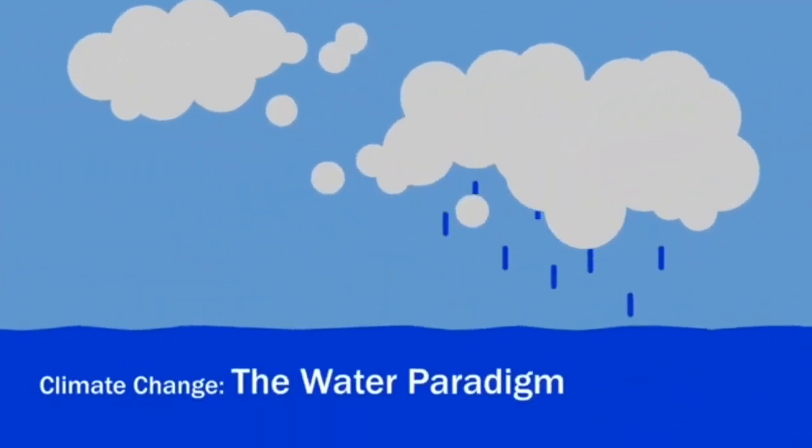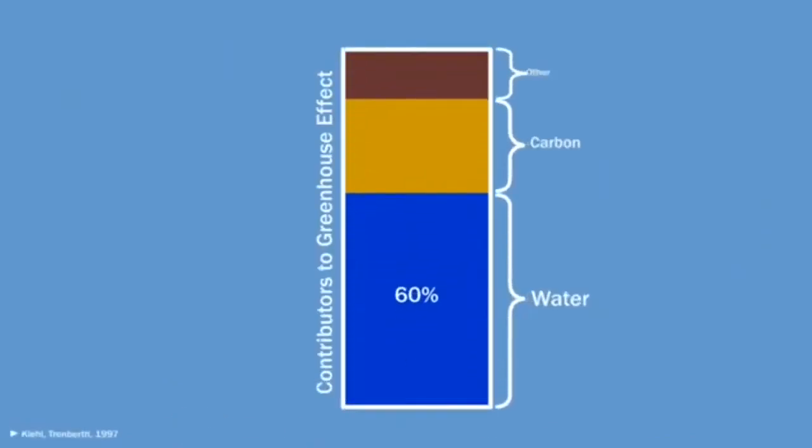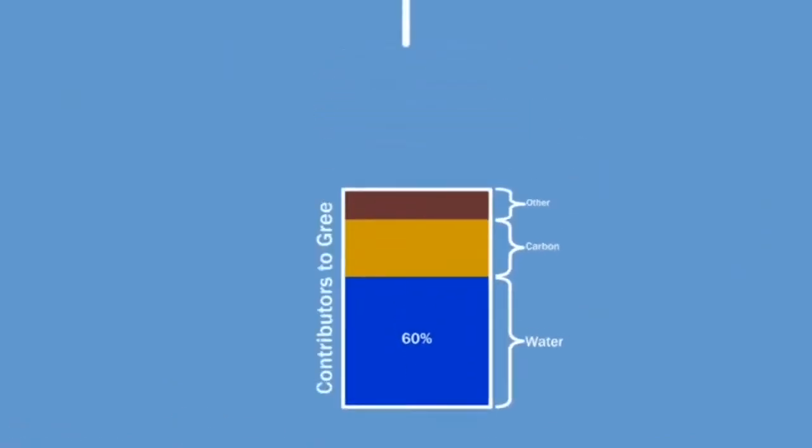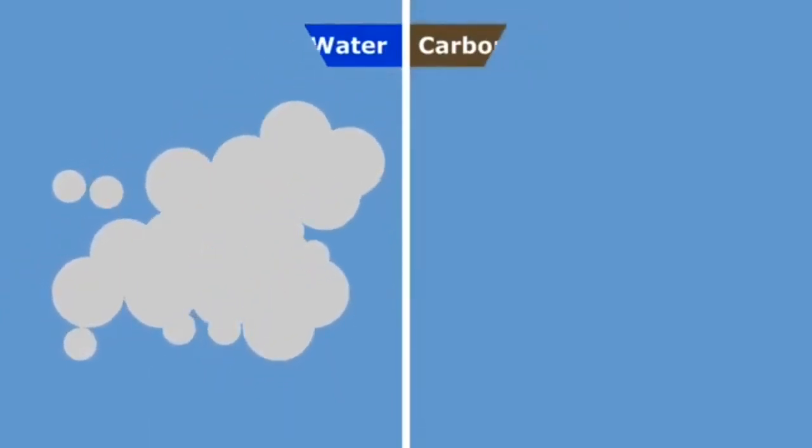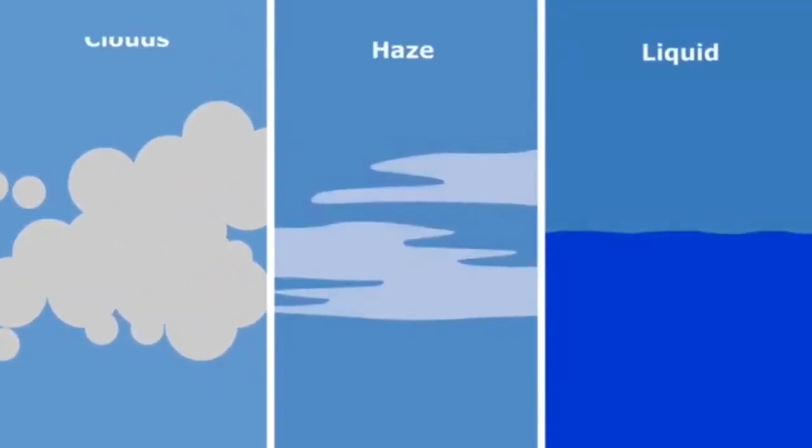One of these things is water. Water is actually the dominant greenhouse gas, but its global effects are difficult to measure because it doesn't spread out evenly in the atmosphere like carbon does. Its effect on temperature also depends on the many forms it takes.